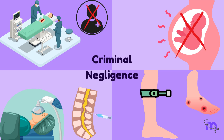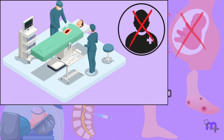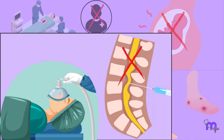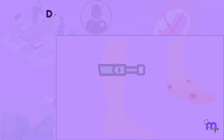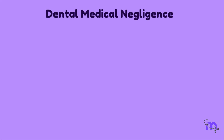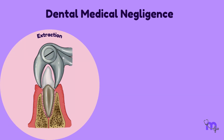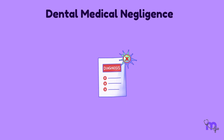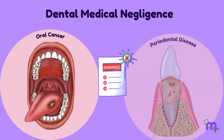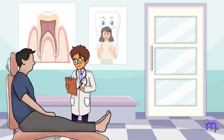Numerous additional situations fall under the category of criminal negligence. This includes operating on the incorrect patient, executing a criminal abortion, administering anesthesia fatally or into the wrong tissues, and even leaving tourniquets on for too long which can result in gangrene. Dental medical negligence could include carrying out procedures like extractions or root canals in a way that injures the patient's nerves or spreads infection. This also includes misdiagnosing oral cancer or periodontal disease.